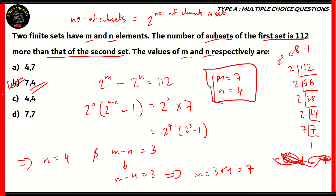Option A has the same numbers but they're inverted, so 2^M would be less than 2^N, which is incorrect. Options C and D would not work because if they had the same exponent and you subtract them, the final difference would be zero. So the right answer is option B: seven comma four. In summary, the number of subsets is 2 raised to the number of elements. To solve this, prime factorize 112 to get 2^4 times 7, convert 7 to 2^3 minus 1, and match the powers of 2 to find M and N.